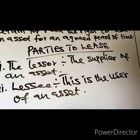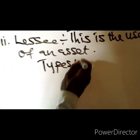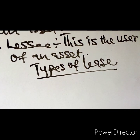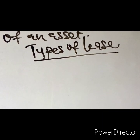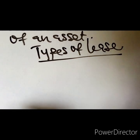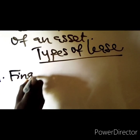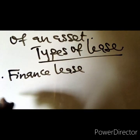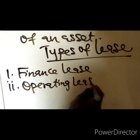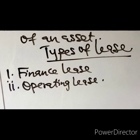Types of leases. In accordance with IPSAS 13, there are two types of leases identified. Number one is finance lease. Number two is operating lease. I want to start with finance lease.